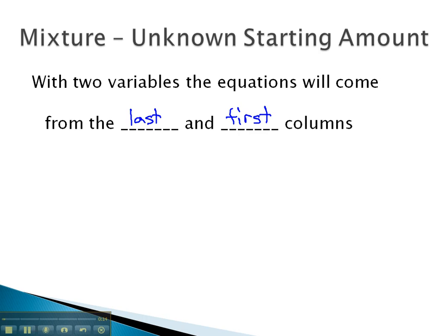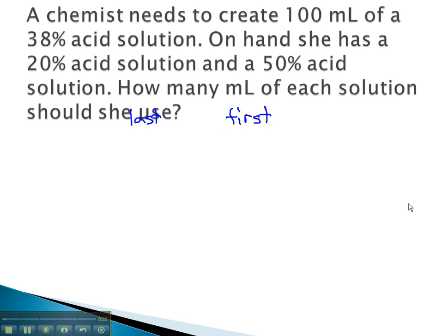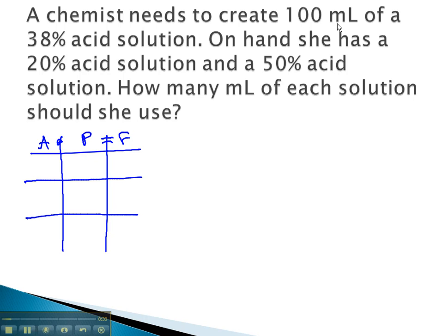Let's take a look at an example where we can use our mixture table and these two equations. Here, a chemist needs to create 100 milliliters of a 38% acid solution. The amount times the part is going to equal the final. We need to be careful here. This 100 milliliters of 38% is what the chemist wants at the end. This is the final amount and the final part. It has a decimal, 0.38.